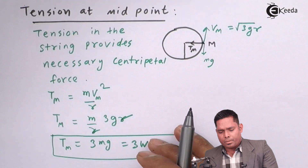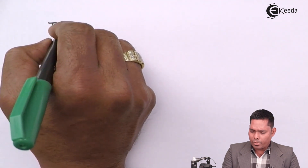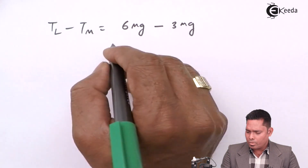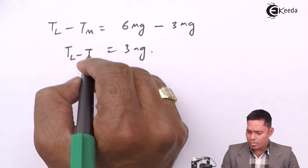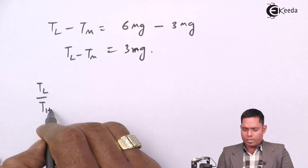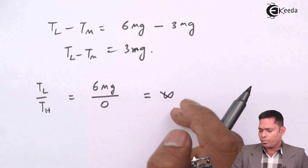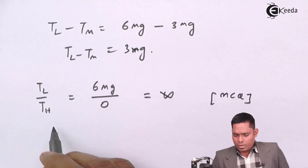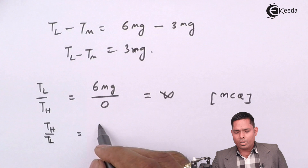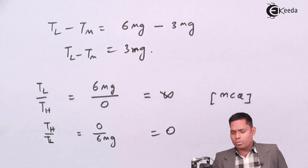The difference of tension between the lowest point and midpoint: T_L = 6MG, T_M = 3MG, so the difference is 3MG. For the ratio of tension at the lowest point to the highest point: 6MG / 0 = infinite. The ratio of tension at the highest point to the lowest point: 0 / 6MG = 0. So this covers all about tension differences in vertical circular motion.